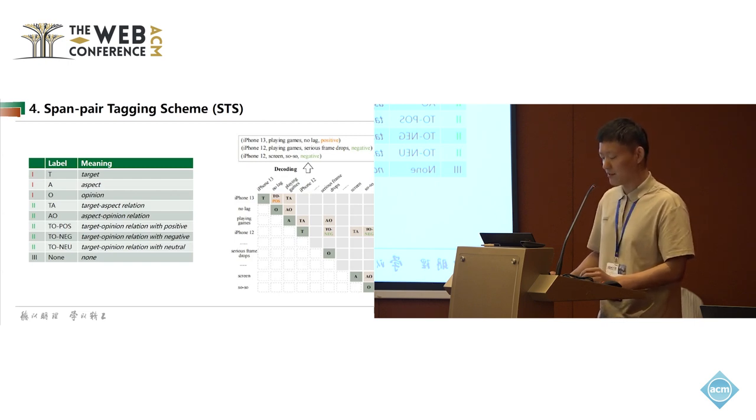For span pairs in the strictly upper triangular region, we use T-A and T-O labels to denote the relations between terms. Besides, we attach sentiment polarities: positive, negative, and neutral.